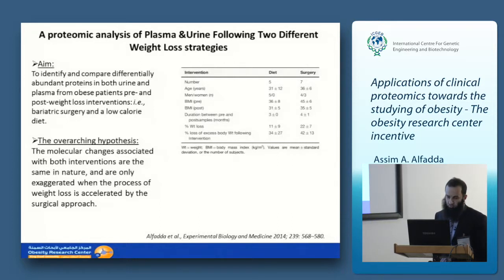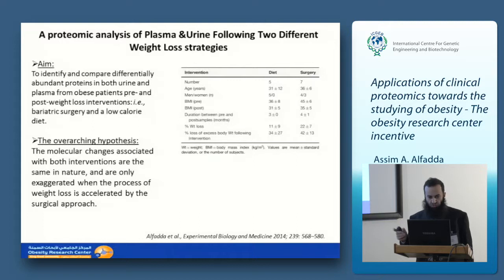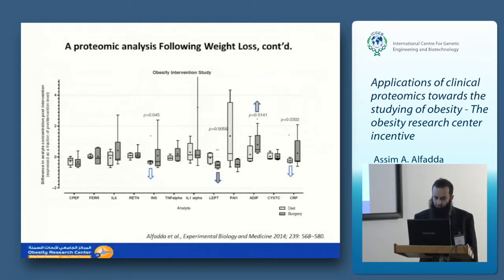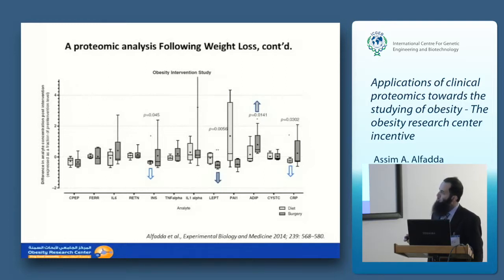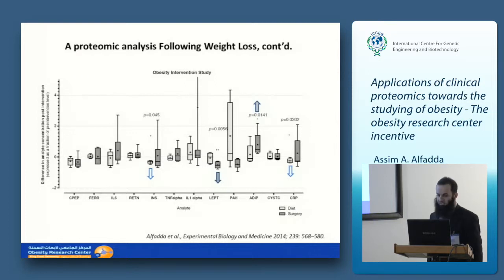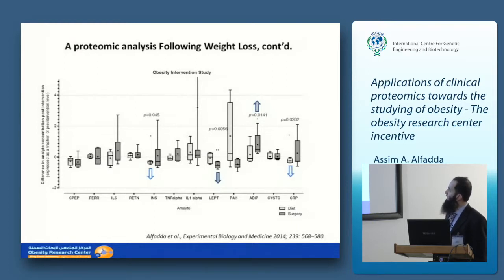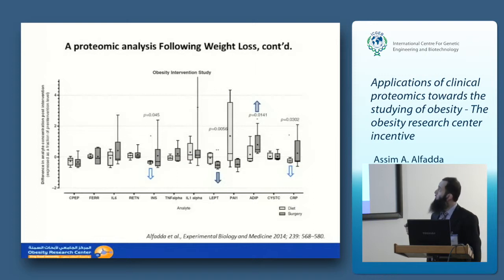We studied the molecular changes associated with body weight reduction in these two techniques, using a targeted approach measuring known biomarkers including IL-6, insulin, TNF-alpha, and others. Interestingly, even with similar weight loss, the two strategies produced different responses. With diet, insulin and CRP dropped. With surgery, leptin dropped. And notably, adiponectin increased only with surgery, not with diet.